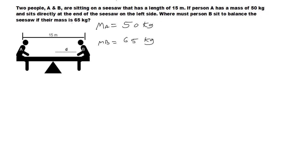And we want to know where must person B sit in order for it to be equal. So, we want to know what this distance D is here. But let's first figure out where person A is sitting. If the seesaw is a total of 15 meters and person A sits directly at the end on the other side, the distance for person A is going to be 7.5 meters from the axis of rotation. The axis of rotation is halfway on the seesaw. And person A is 7.5 meters away from the axis of rotation. So, we call that the radius of person A. So, we're going to write r_A equals 7.5 meters.